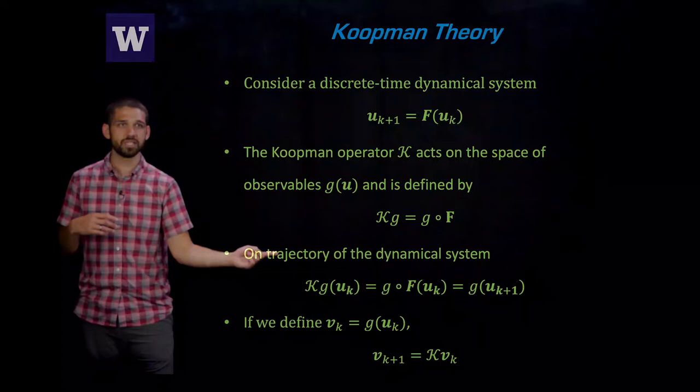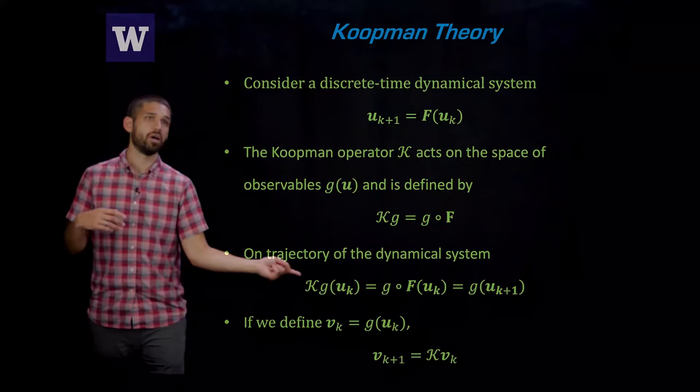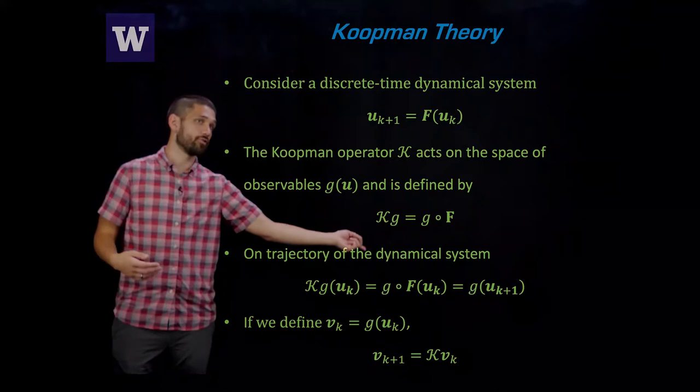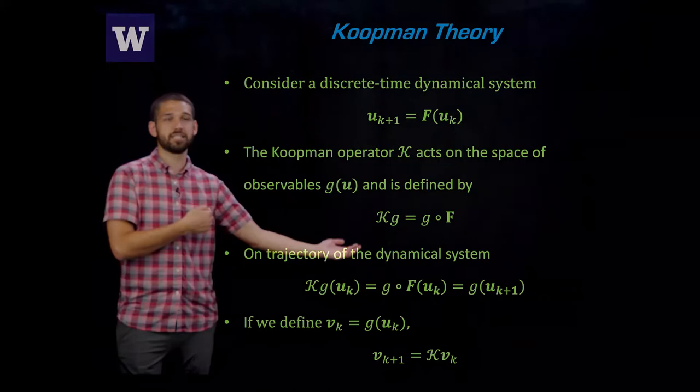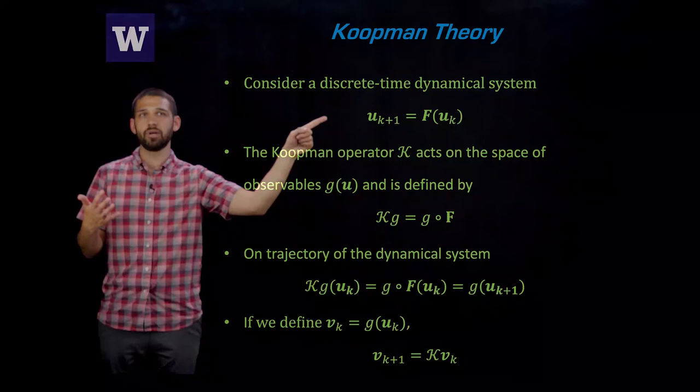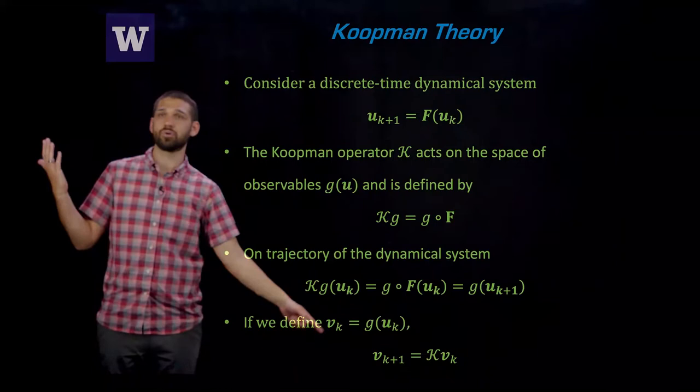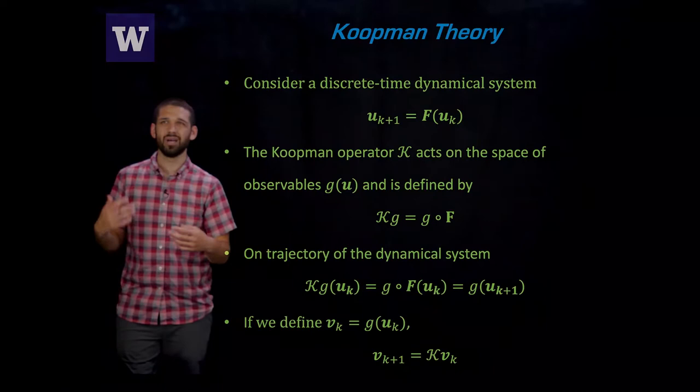And importantly for us, the Koopman operator is linear. And what happens on some trajectory of our dynamical system? If you apply the Koopman operator to some observable at UK, by definition, you're going to get the observable G at UK plus one at some later time. So if you just change some notation a little bit from this line, what we get is VK plus one equals our Koopman operator applied to VK. So if you compare the bottom and the top, we went from some discrete time dynamical system that is maybe nonlinear, and we ended up with some discrete time dynamical system that's linear. So this is the mathematical framework that we're going to be using.